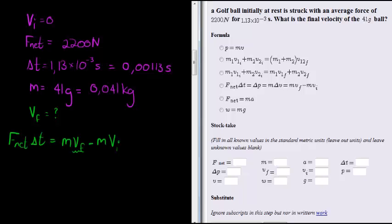So all we need to do is substitute. We get 2200 newtons is applied for 0.00113 seconds on a mass of 0.041 kilograms. Reaching a future velocity of what we want to calculate minus 0.041 times the initial velocity which is 0. So all we need to do now is solve for future velocity.